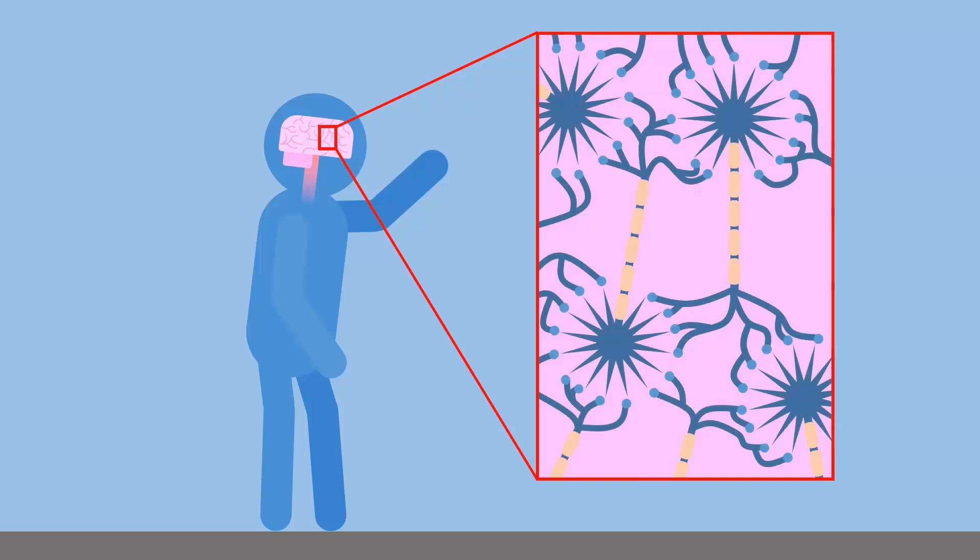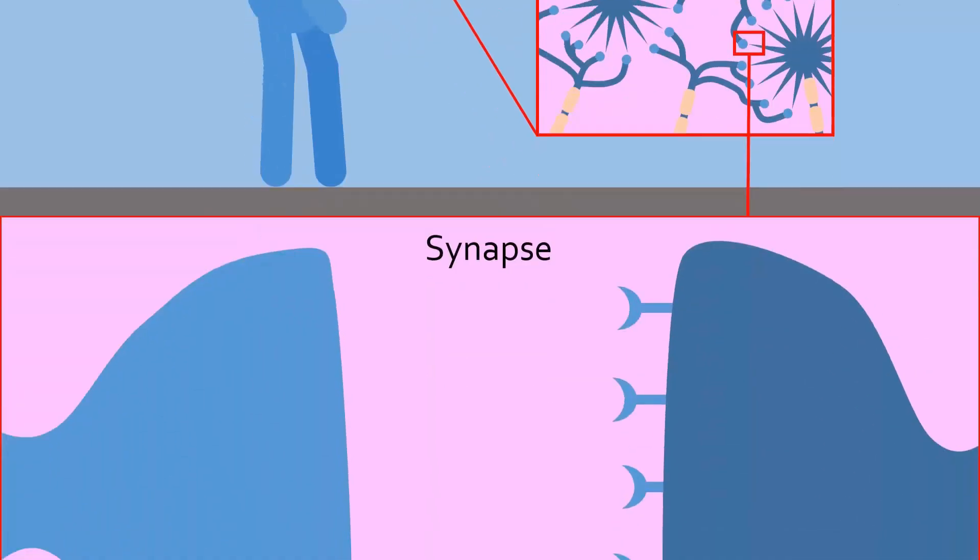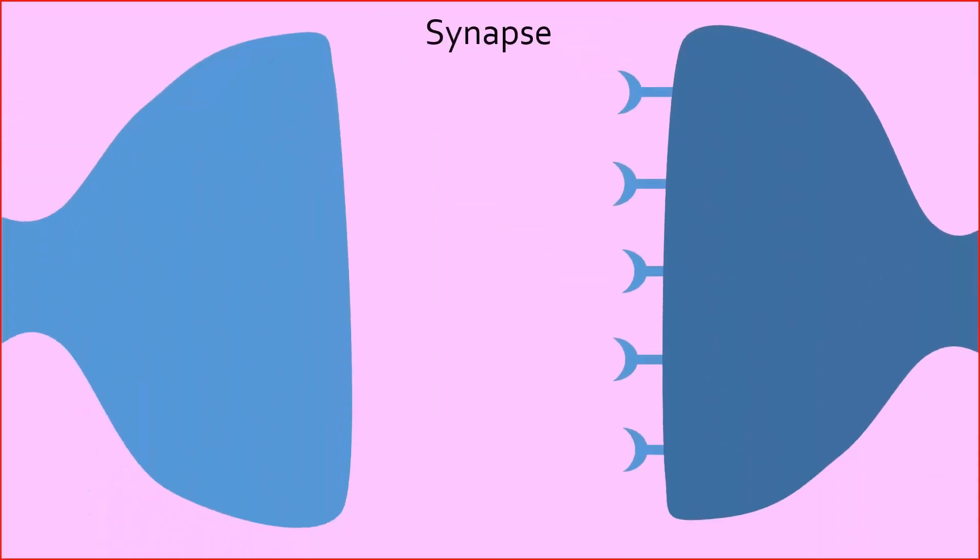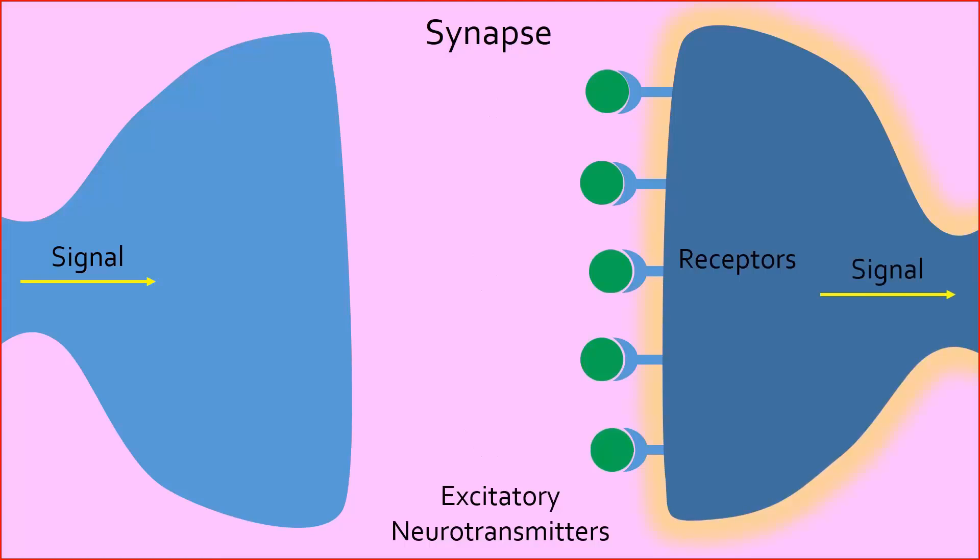Our brain and nerves are made up of cells called neurons which form a vast network. Let's zoom into one of these connections between two neurons called a synapse. When a signal moves down a neuron, that neuron will release chemical messengers called neurotransmitters into the synapse. These neurotransmitters can bind to receptors on the next neuron to excite it, allowing the signal to continue on.